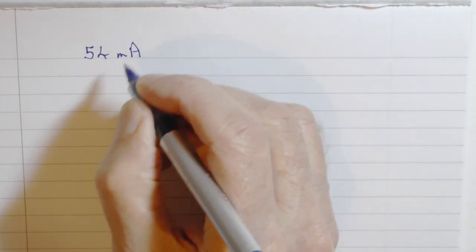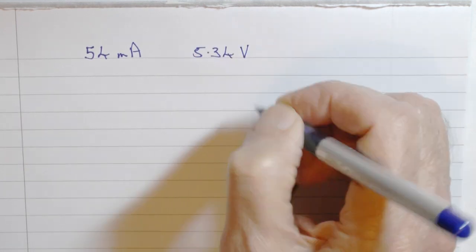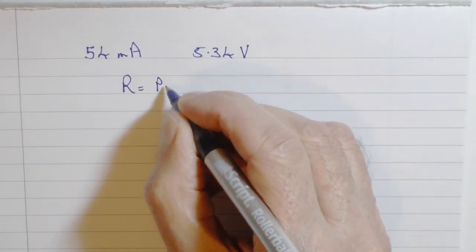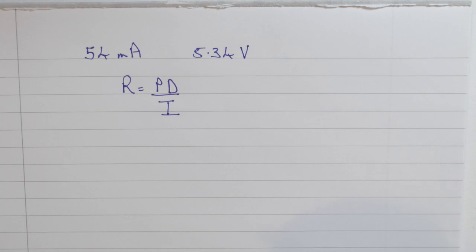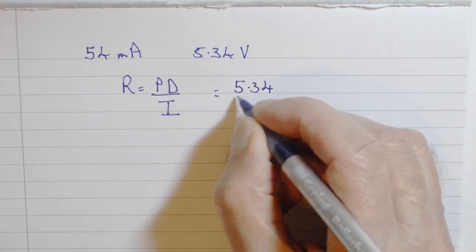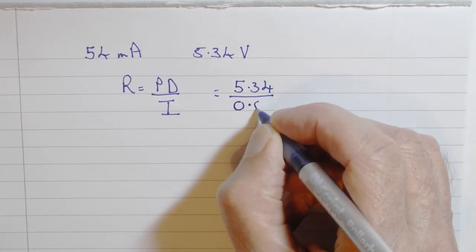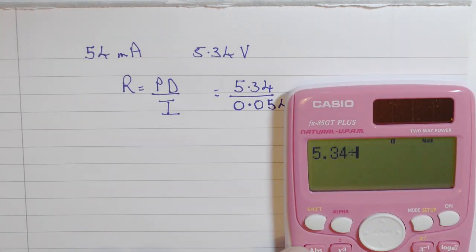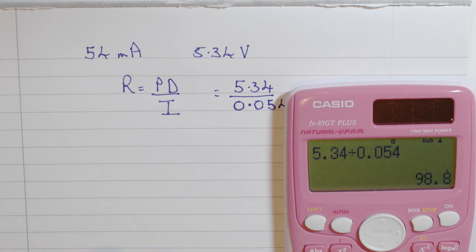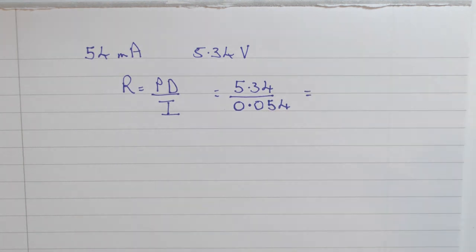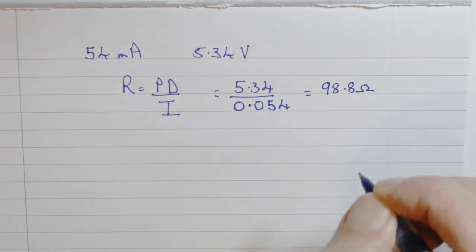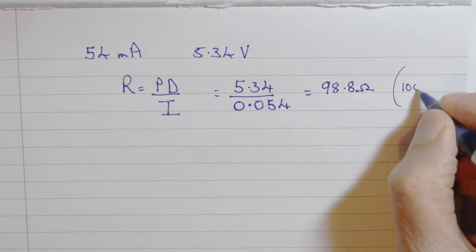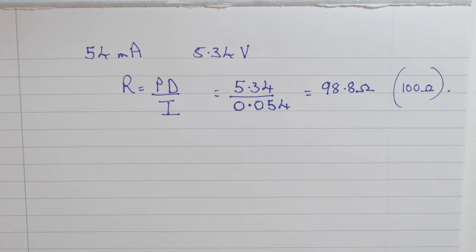So let's quickly work out an accurate value of the resistance. 5.34 volts, so it's potential difference divided by current, 5.34 divided by 54 milliamps which is 0.054 amps. Calculating that through, first as a fraction and then as a decimal is 98.8 ohms. This was nominally a 100 ohm resistor but that's well within the normal manufacturing tolerances.